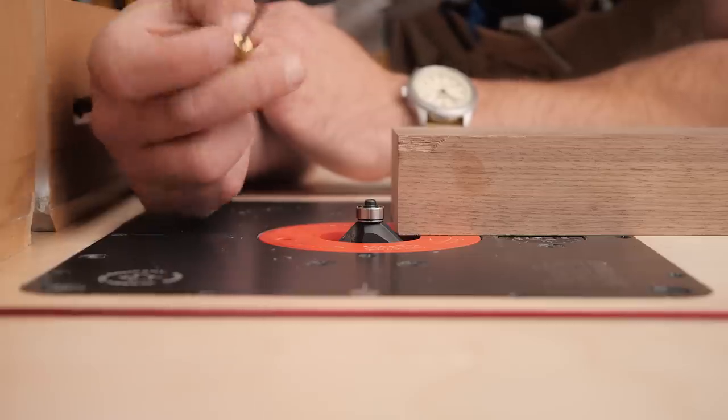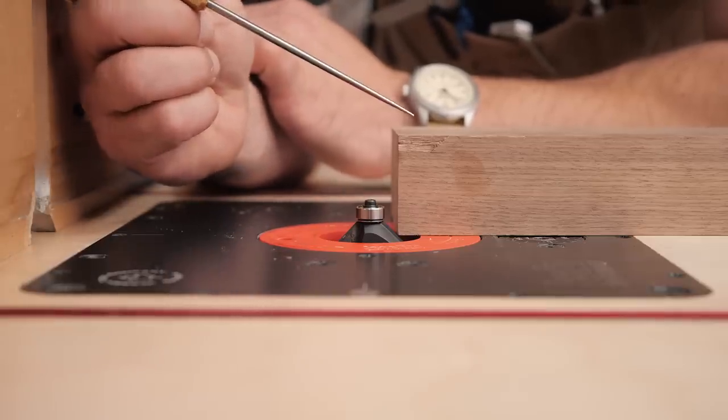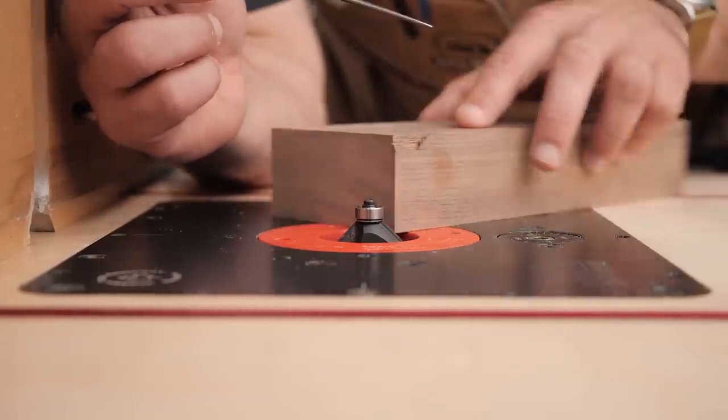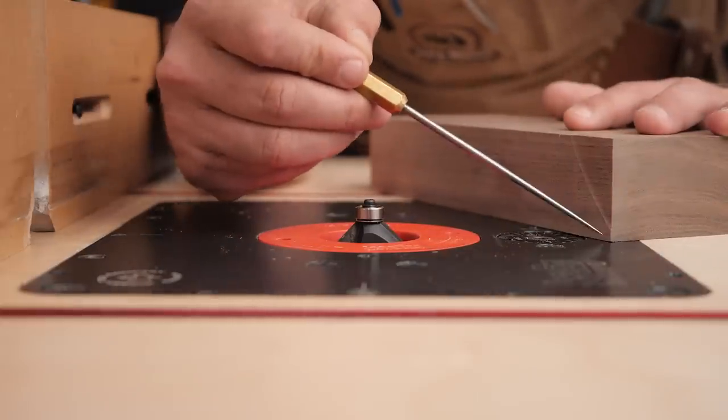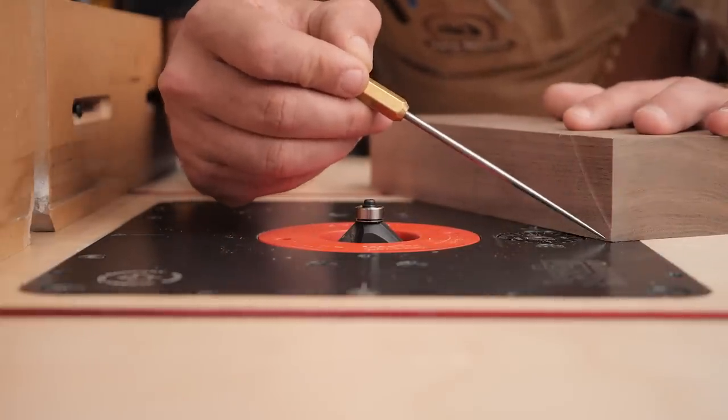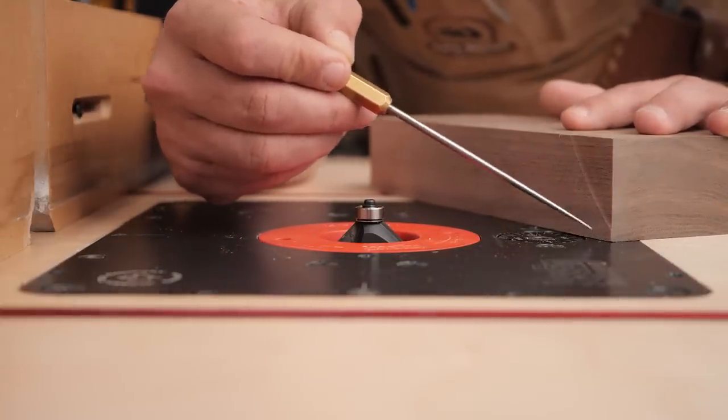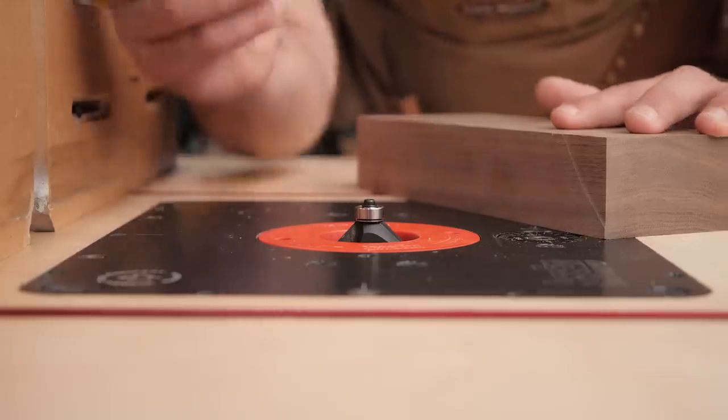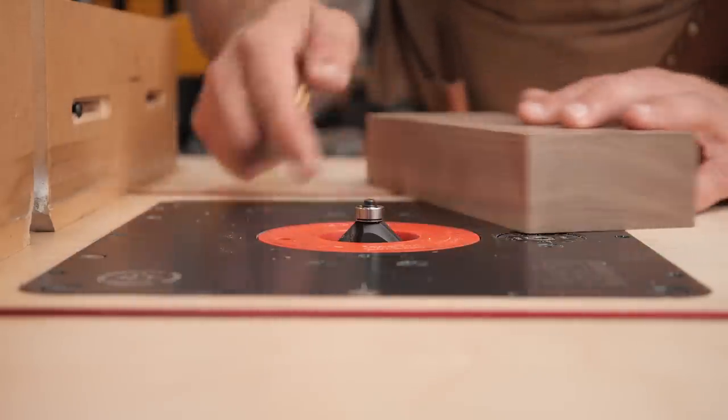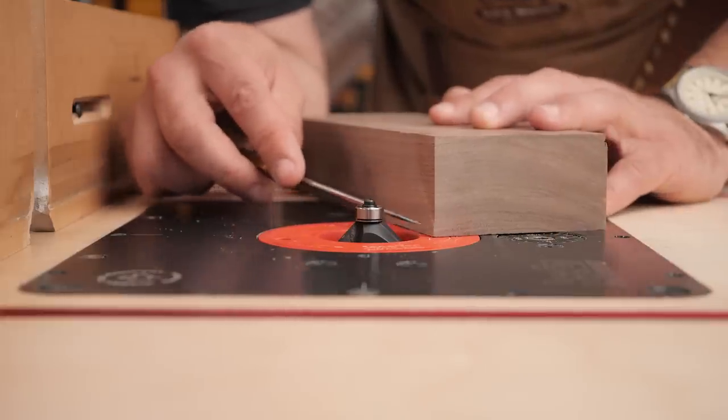But it's not a maybe, it's a definite. It is going to happen when you're edge profiling. The older and less sharp your bit is, the more it's going to happen. So the way you combat this is you do end grain first and you're going to get tear out, but that tear out is never going to be below, or I guess in this case it's never going to be above when you do your long grain. So you do your end grain, most of the time you're going to get a little tear out here at the end.